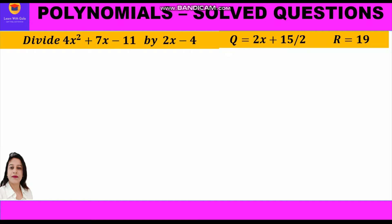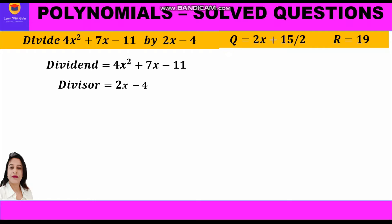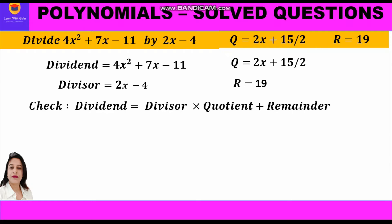Now let us check our answer using the division algorithm. The four elements required are dividend, divisor, quotient, and remainder. We substitute in the equation: dividend equals divisor into quotient plus remainder. So 4x² + 7x − 11 should equal (2x − 4)(2x + 15/2) + 19.